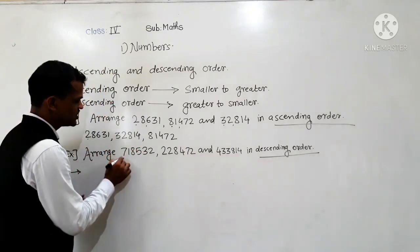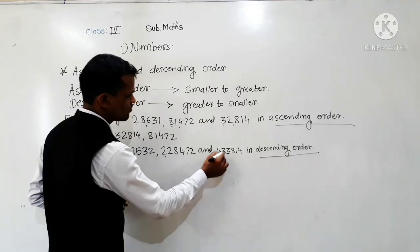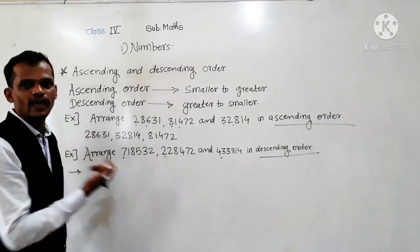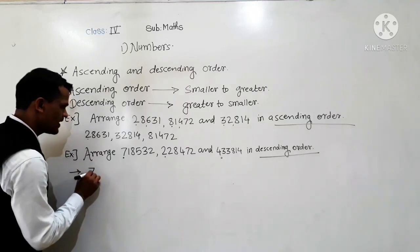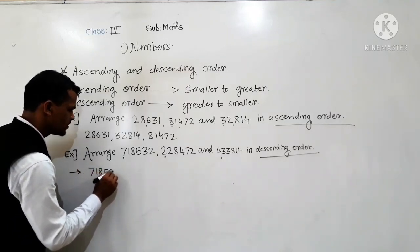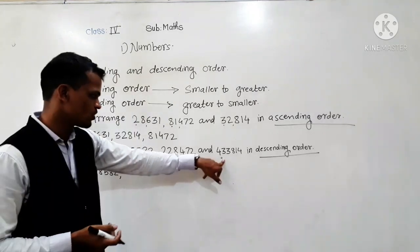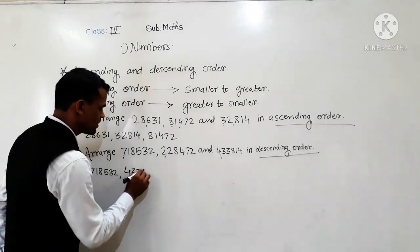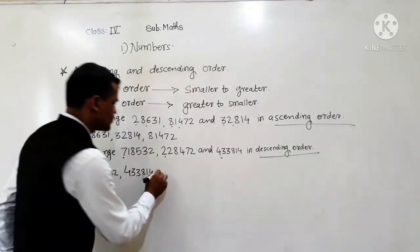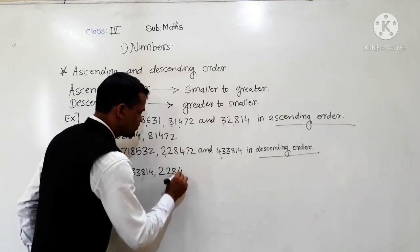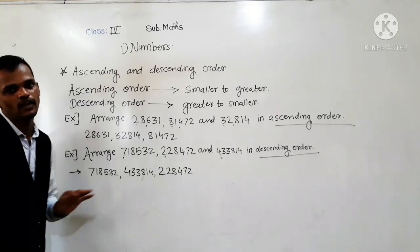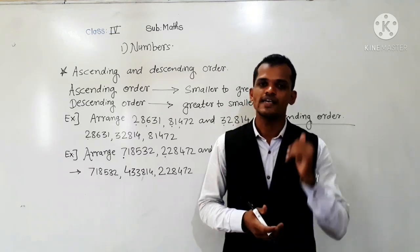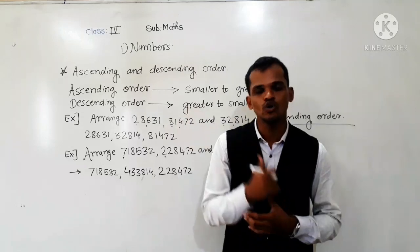Compare the lakh place digit: here 7, here 2, here 4. The greatest digit is 7, so write 7,18,532 first. Then smaller than 7 is 4, so write 4,33,814 next. And at last, 2,28,472. So this is the descending order. This is a very simple concept — ascending order means small to big, descending order means big to small.